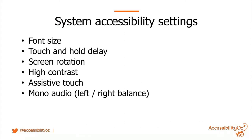There are also system accessibility settings quite different to desktop. Font size often operates differently, using two-finger touch. There's touch and hold delay, screen rotation — on desktop we're used to a horizontal rectangular display, but on mobile the display is usually vertical, as you see when videos filmed on mobile are played on desktop with all that dead space.